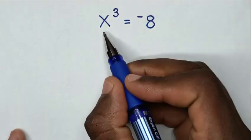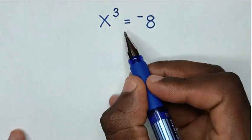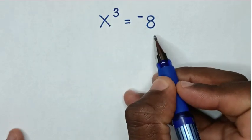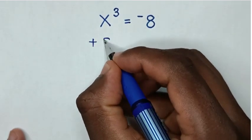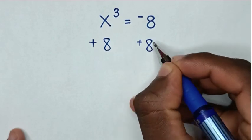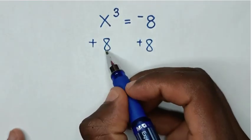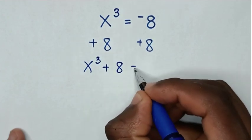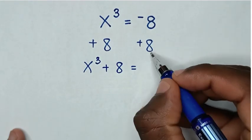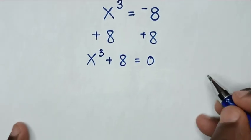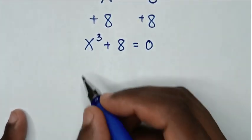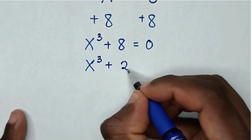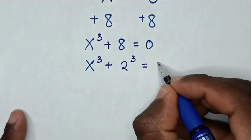Hello. How to solve x³ = -8 to find the values of x from this equation. So we'll add 8 to both sides. Then it will be x³ + 8 = 0. Then plus 8 is the same as 2³, so our equation will be x³ + 2³ = 0.